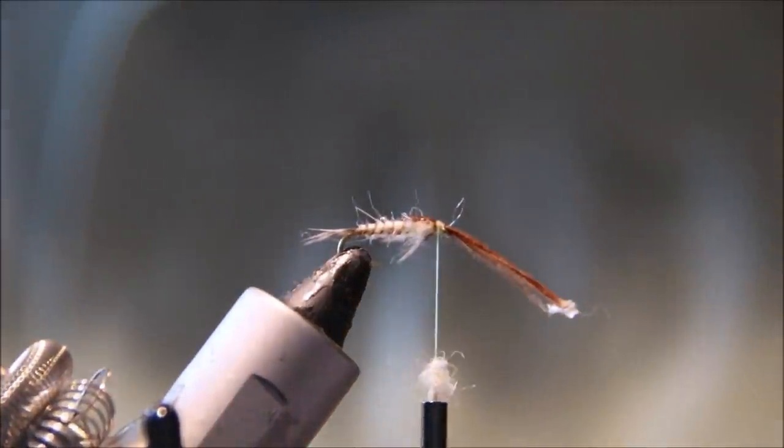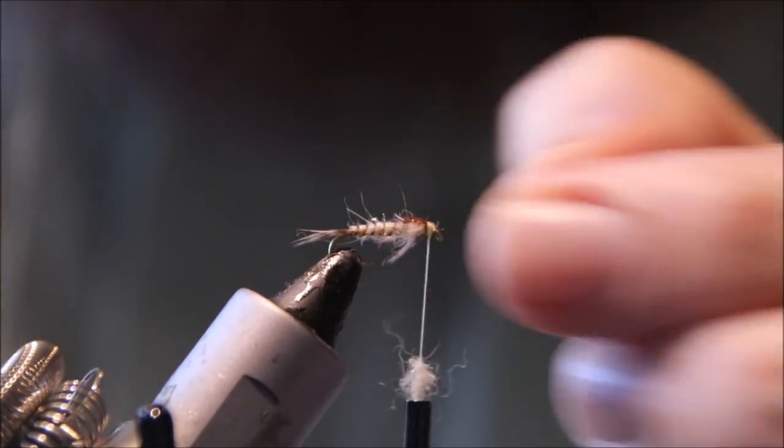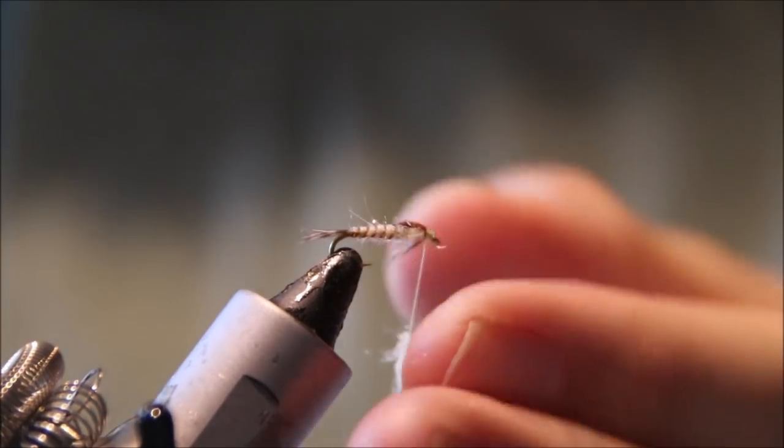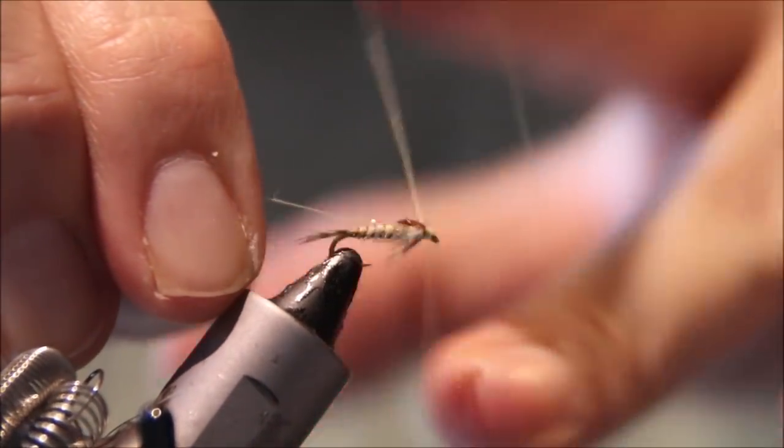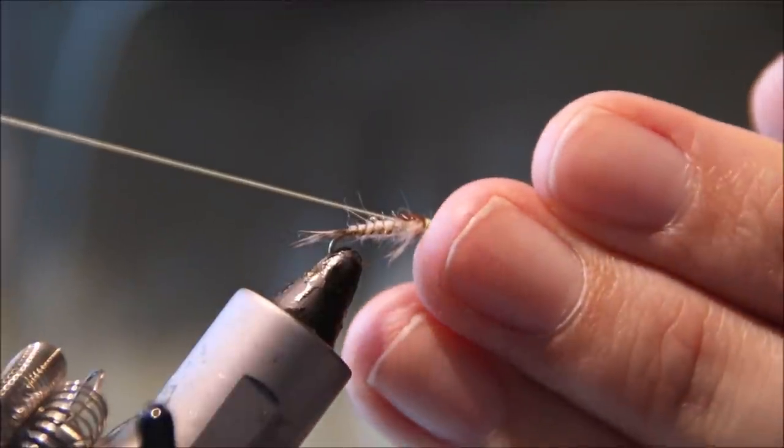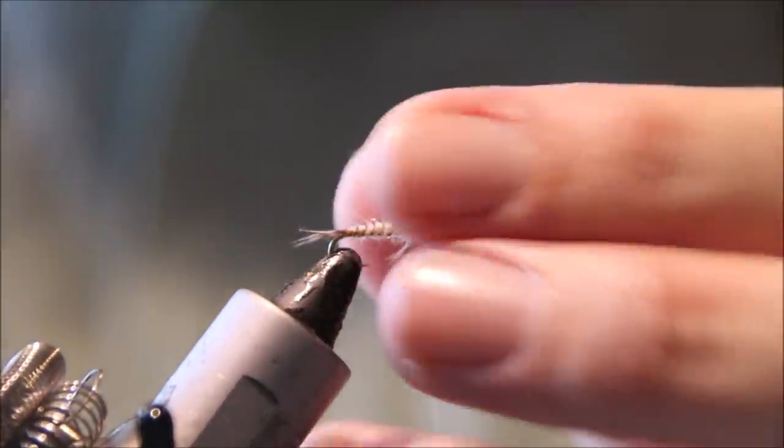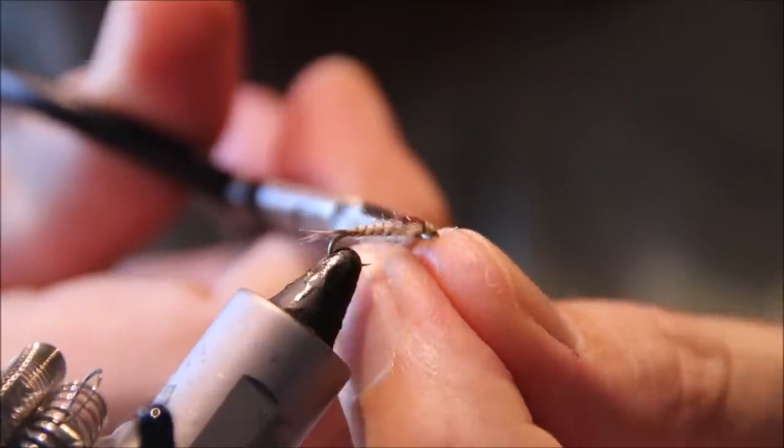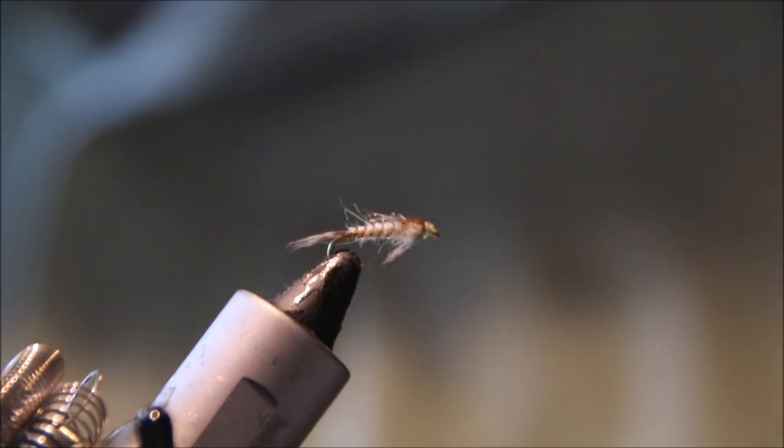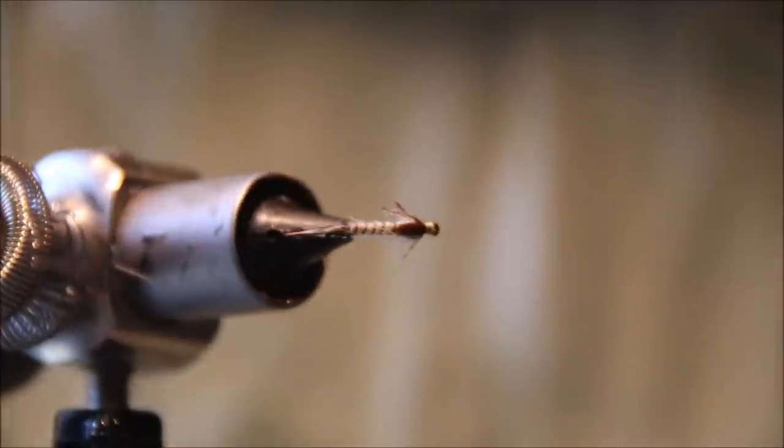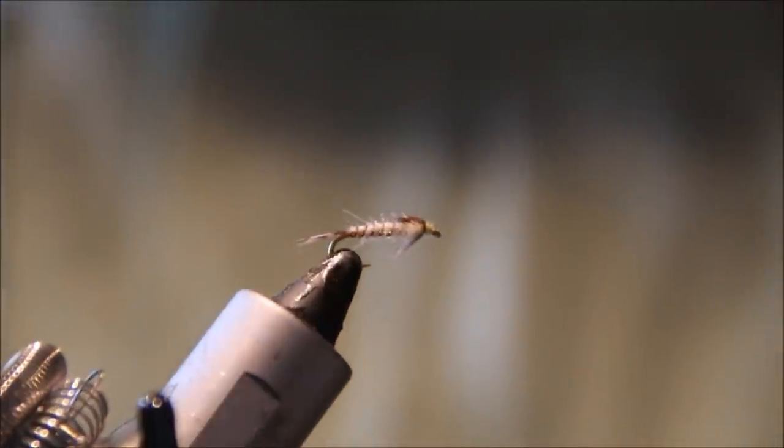Two or three wraps will hold it. Slide your scissors under, trim the waste away, and you're ready to whip finish. One, two, three - plenty. Pull it nice and tight, and there you go - a simple little Mayfly or Baetis nymph. You can see the dark wing case and light body. It's very effective.